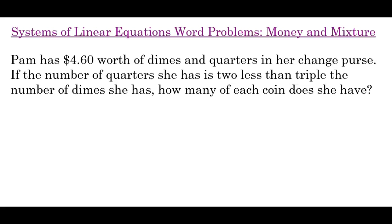Our first example: Pam has $4.60 worth of dimes and quarters in her change purse. If the number of quarters she has is 2 less than triple the number of dimes she has, how many of each coin does she have?